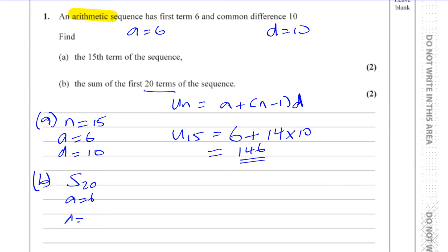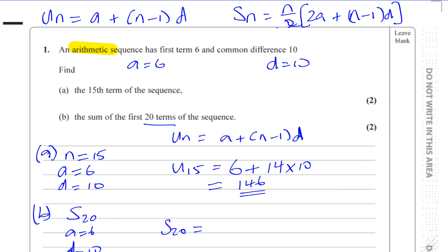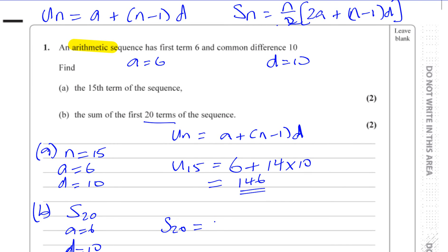The sum of the first 20 terms, using the formula above, is n over 2. So n over 2, which is 20 over 2, which is 10, times 2a, so it's 2 times 6, plus n minus 1, which is going to be 19, times d, which is 10.